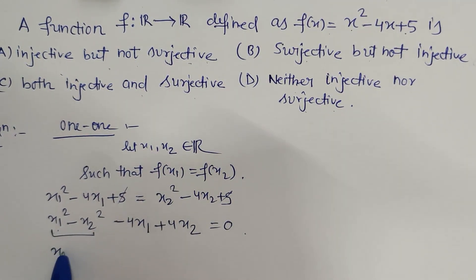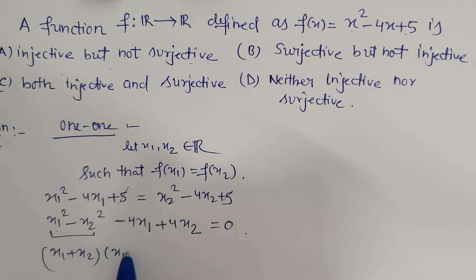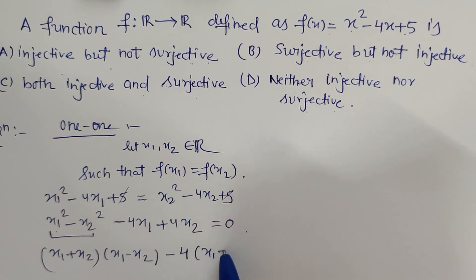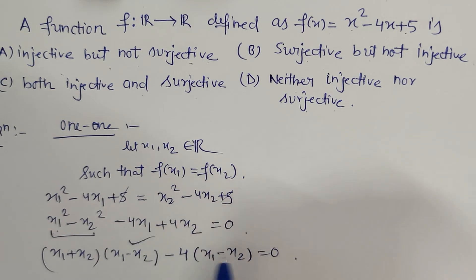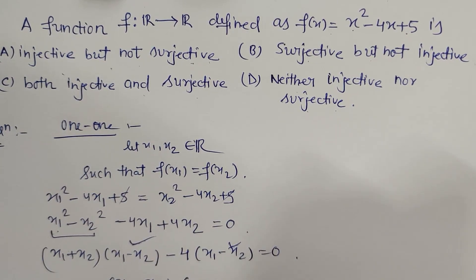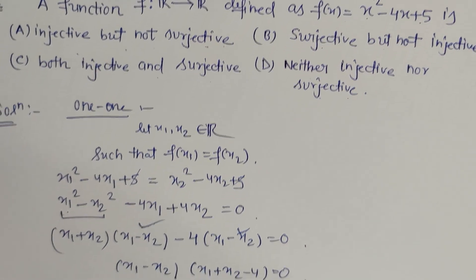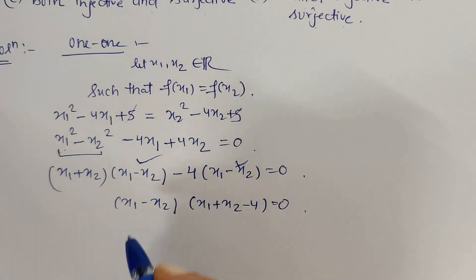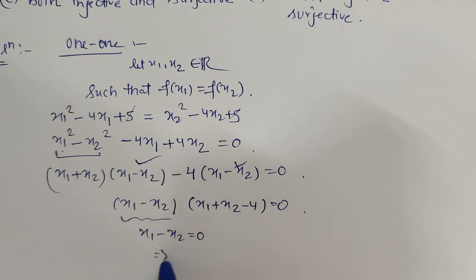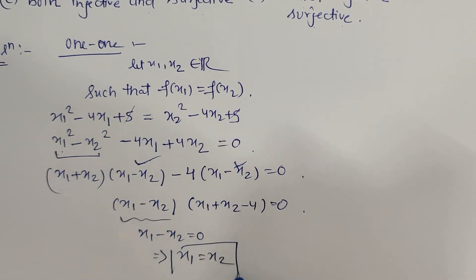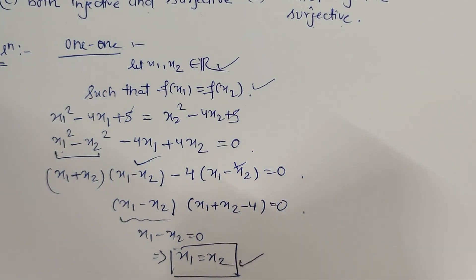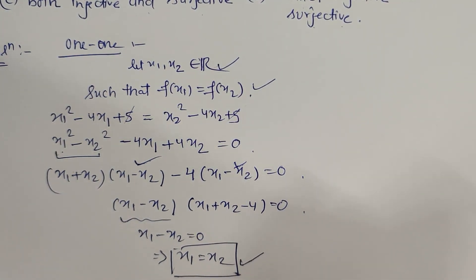This is (x₁ + x₂)(x₁ - x₂) and here I can take -4(x₁ - x₂) = 0. Both are the same, so (x₁ - x₂)(x₁ + x₂ - 4) = 0. This is possible only if one of the brackets is zero. Let's compare this with zero: x₁ - x₂ = 0, which gives x₁ = x₂. This is the expected result we wanted. So here, f is one-to-one—this we have proved mentally.